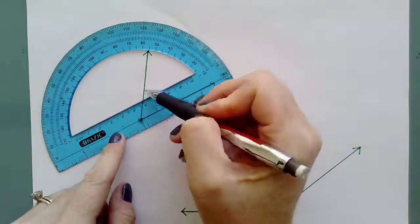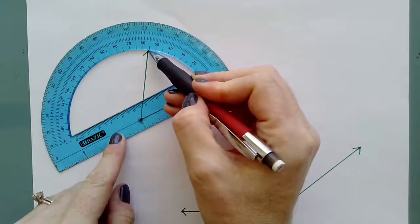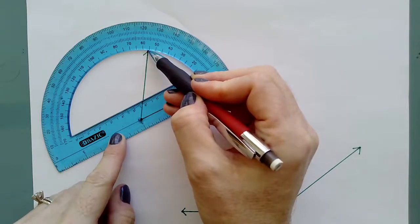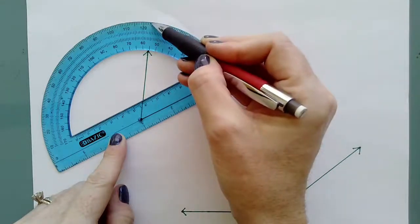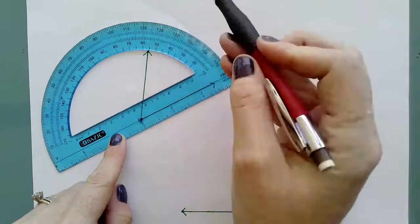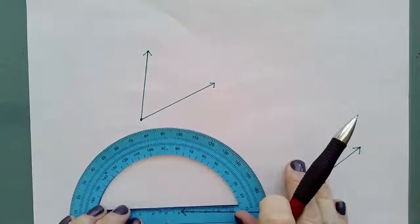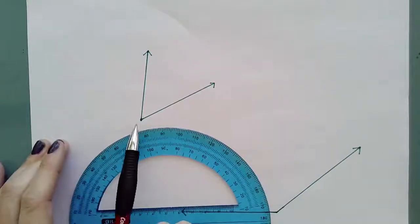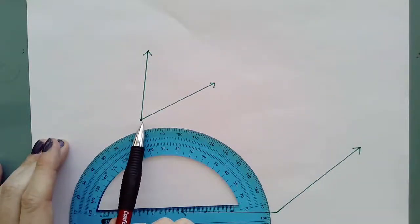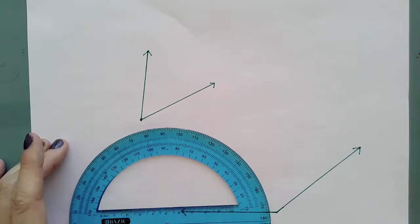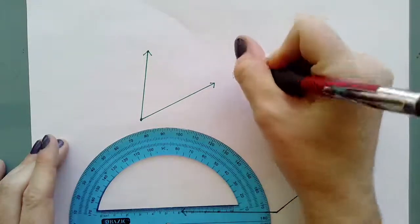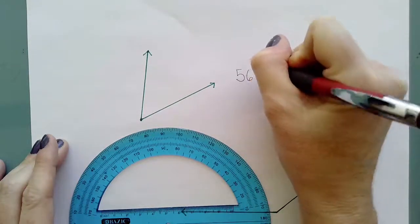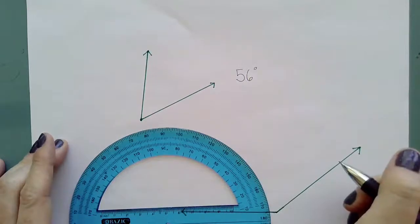So as I follow this line, I see that it hits right here at either 56 or it hits at 124. So as I pull my protractor away, well, I know it can't have the angle of 124 because this is an acute angle. So it has to be less than 90 degrees. So I know that the measure of this angle is going to be 56 degrees.